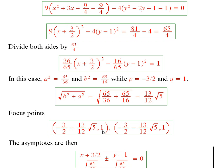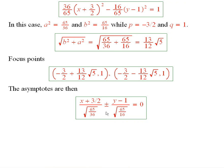You take the minus 3 halves and you add this to it and you subtract that from it. And the other component is just the 1, q equal to 1. And then also from that procedure these are the correct asymptotes.